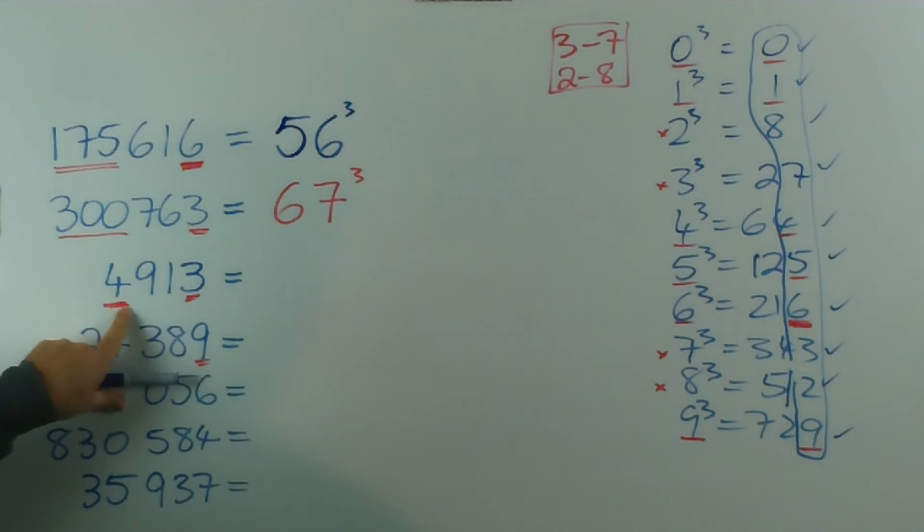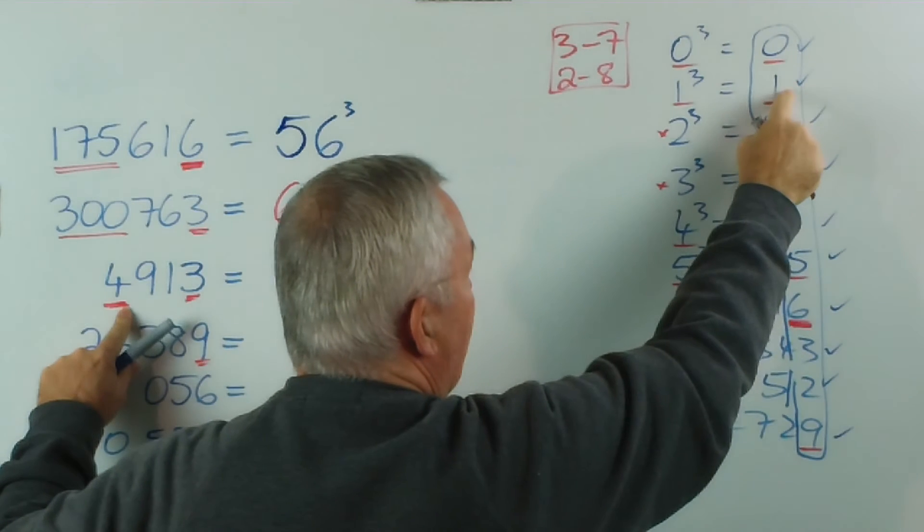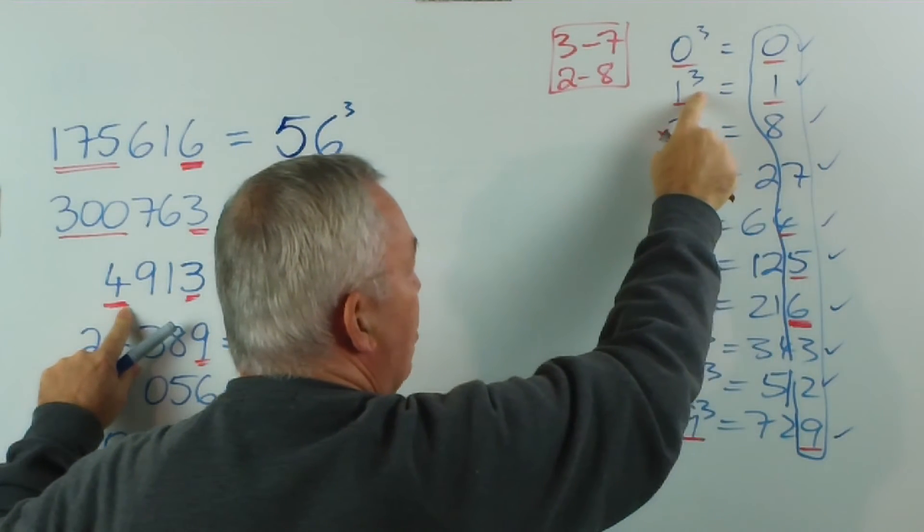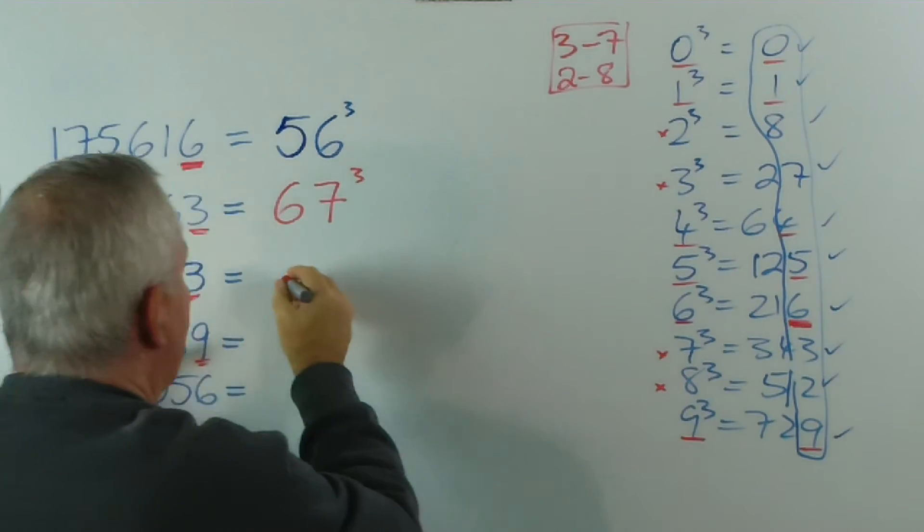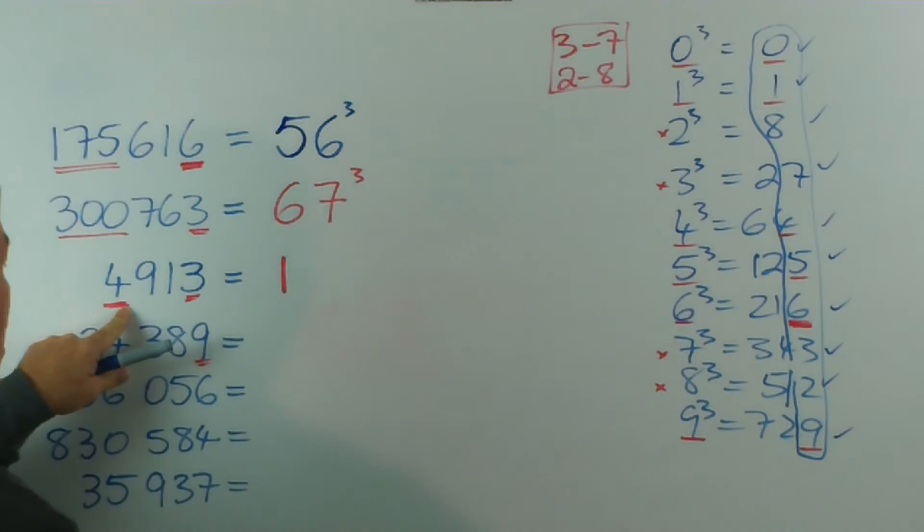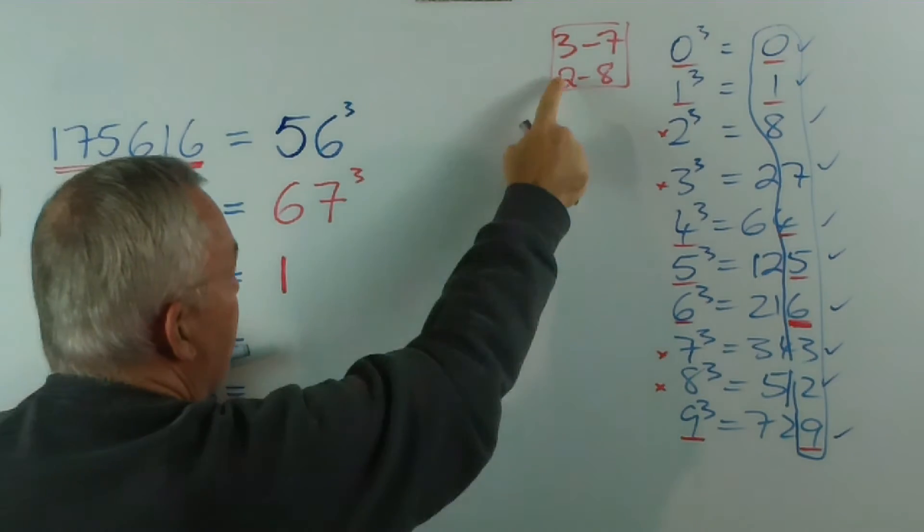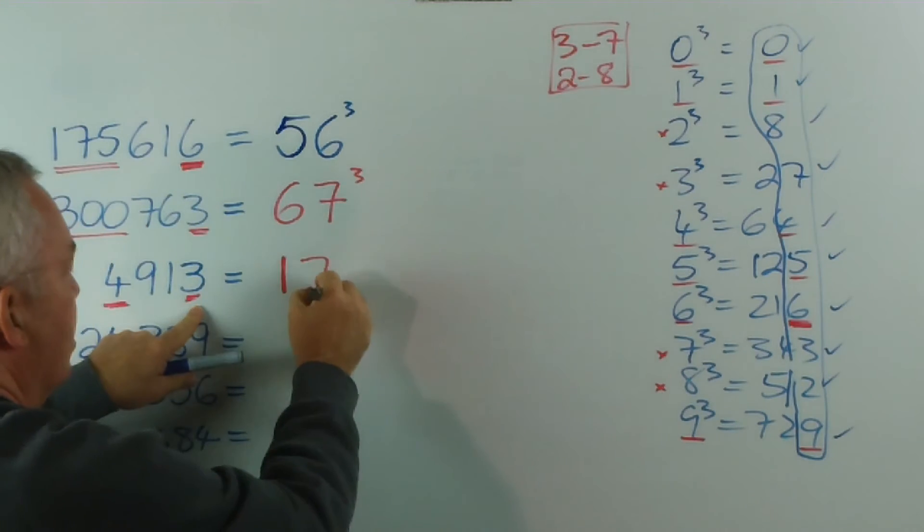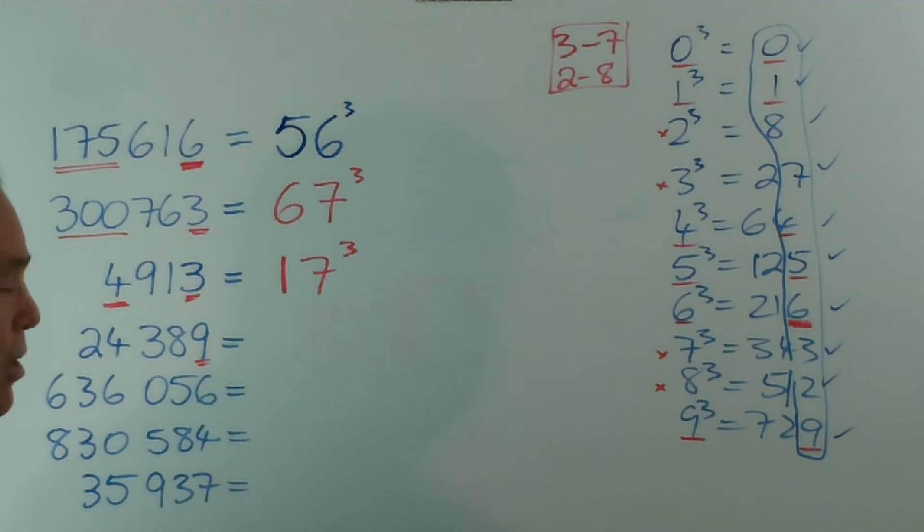In the thousands, this is quite small, isn't it? Four is between one and eight. So, all we can guarantee is we've got one cubed. It's not big enough to be two cubed. So, the first digit's going to be a one. And, ending in a three, it's one of our three seven pairs. So, it tells us the last digit is a seven.